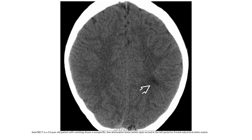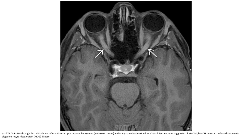Non-contrast CT in a 14-year-old with vomiting shows a nonspecific low-attenuation lesion in the right frontal subcortical region. T1 plus FLAIR MRI shows diffuse bilateral optic nerve enhancement in a 9-year-old with vision loss. Clinical features suggested NMOSD, but CSF analysis confirmed anti-myelin oligodendrocyte glycoprotein (anti-MOG) disease.